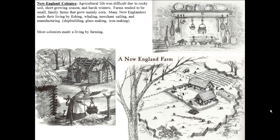What's typical for a New England colony: agricultural life was difficult due to rocky soil, a short growing season, and harsh winters — those are the three major reasons, and you'll see them on quizzes, tests, and the final exam. Farms were small family farms that mainly grew corn because the weather was so harsh, the soil rocky, the winters cold, and the growing season short. Many New Englanders made their living by fishing, whaling, merchant sailing, and manufacturing.